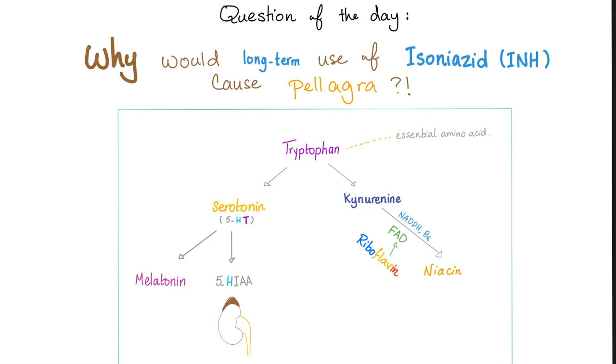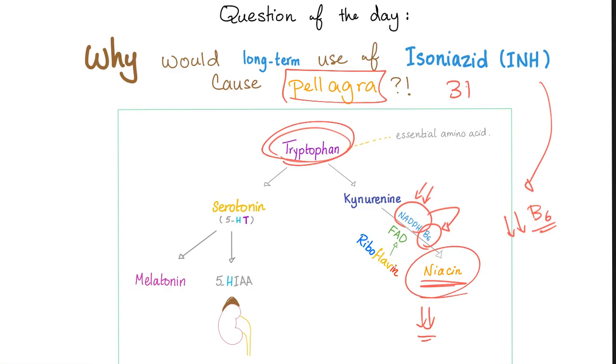Let me answer the question of the previous video. Why would long-term use of isoniazid INH, an anti-tuberculosis drug, cause pellagra? Tryptophan can become niacin, but in order to do this, you need NADPH. Where did NADPH come from? It came from vitamin B6. So long-term isoniazid use can lead to vitamin B6 deficiency, especially if your doctor did not provide vitamin B6 supplements.